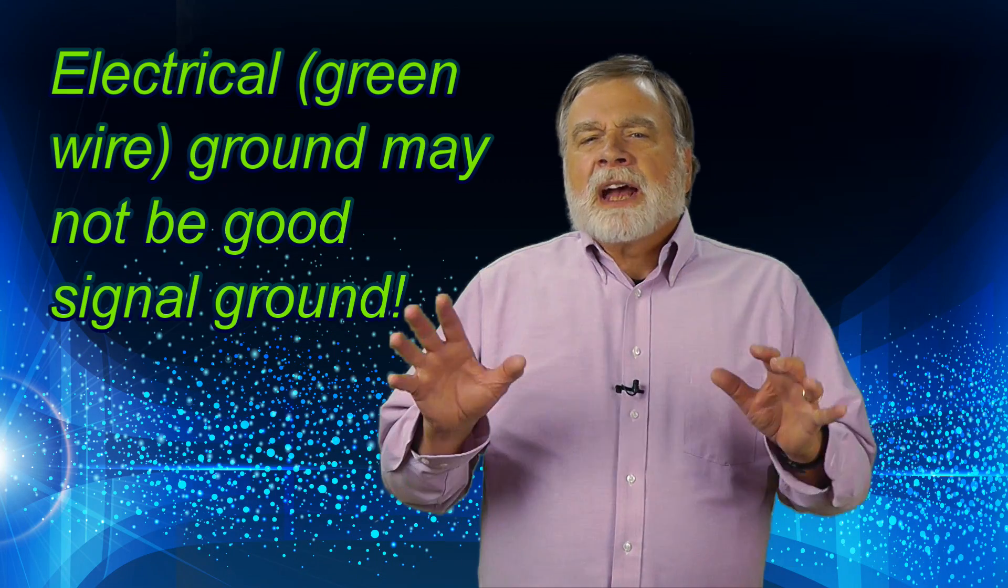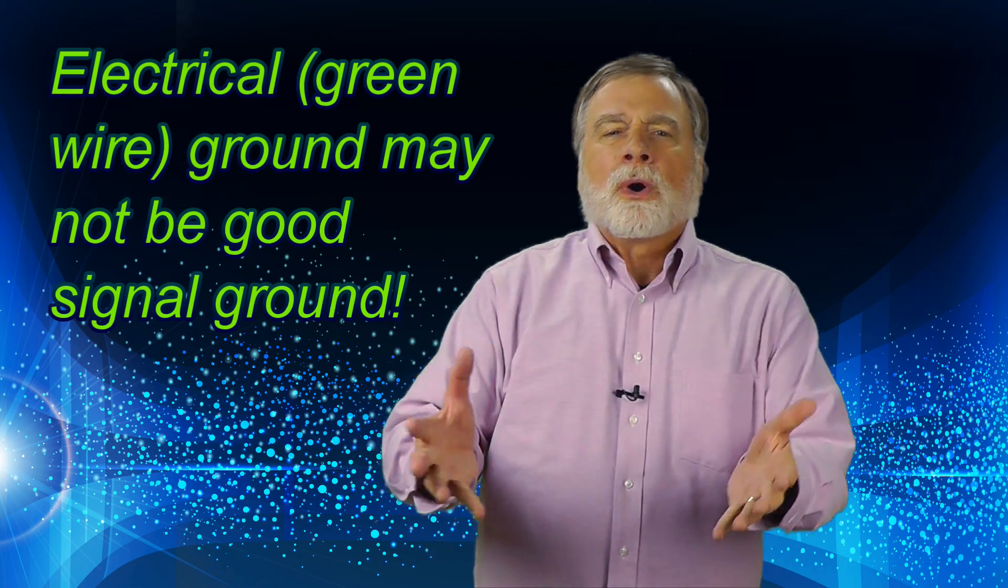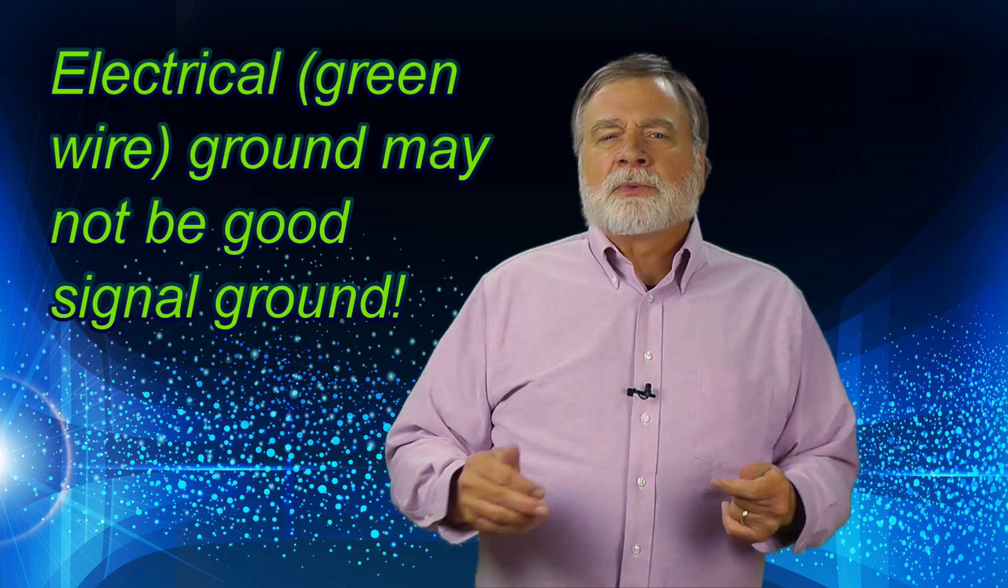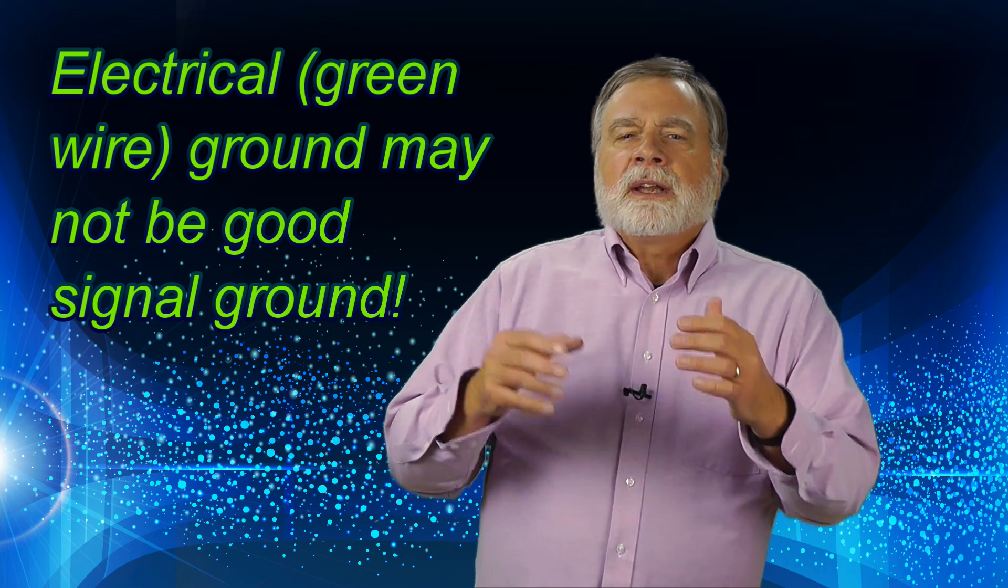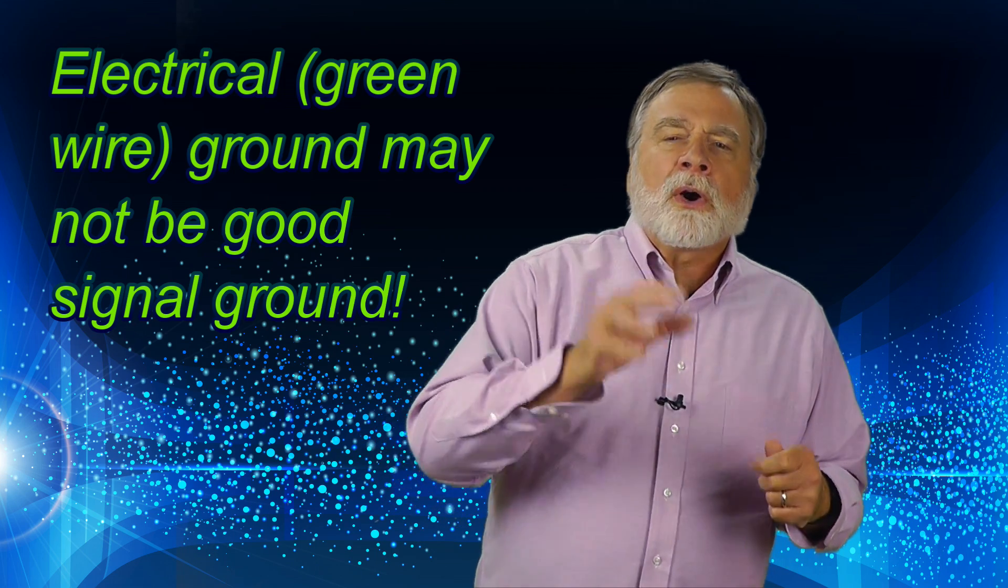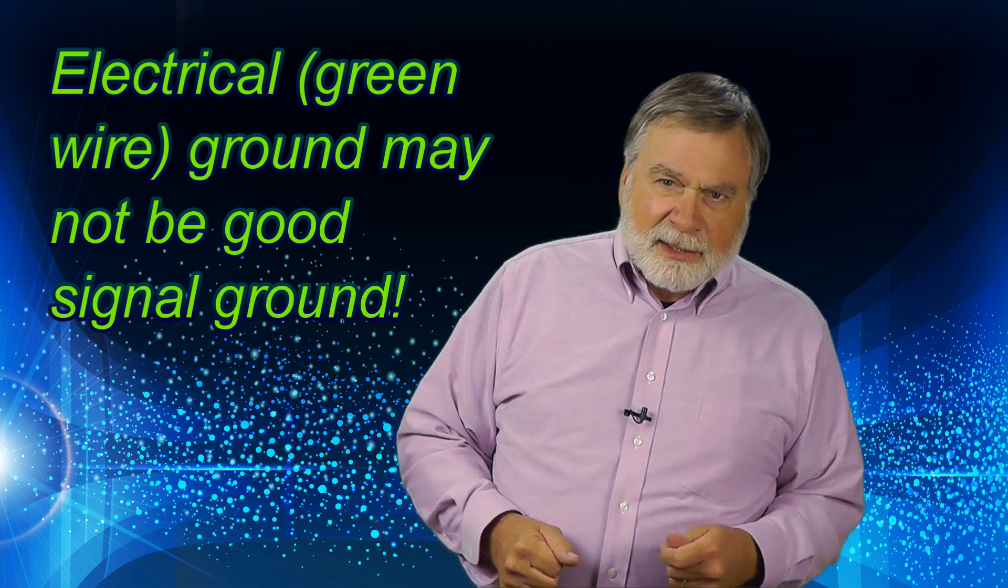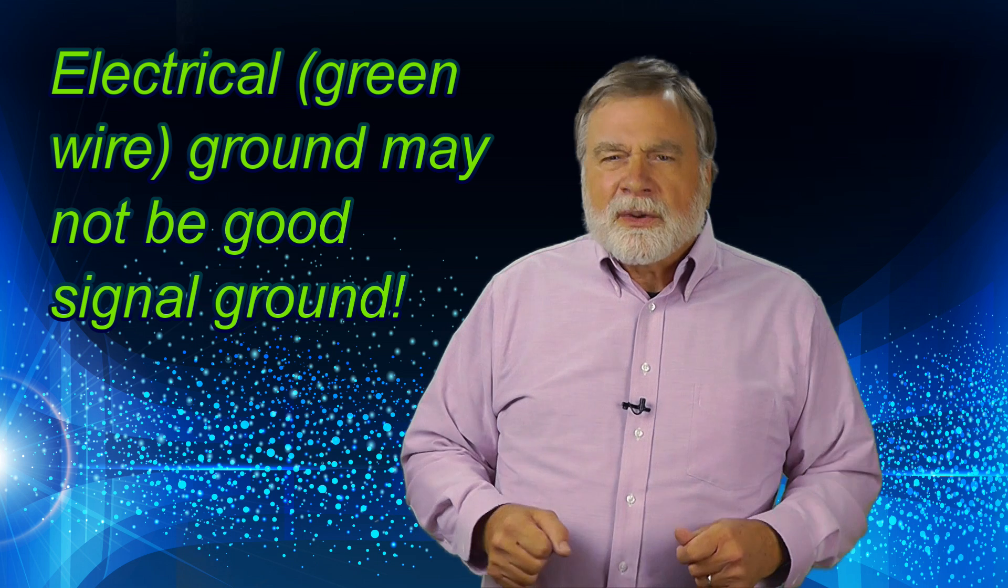Now you may ask, isn't the station grounded via the power supply, which after all has a three wire ground plug? Yes, that helps when dealing with DC electrostatic currents. But usually the utility electrical ground point is so far away that the household wiring can act as an antenna. It's much better to have a dedicated station RF ground.